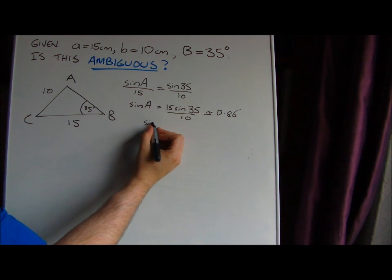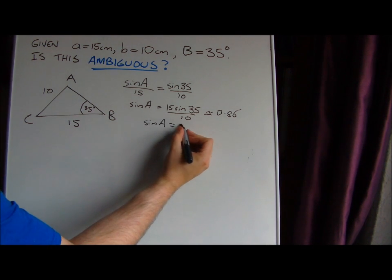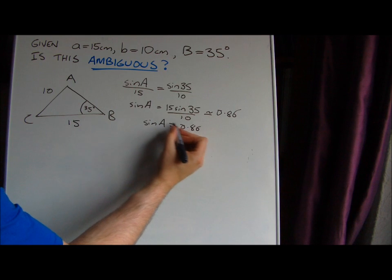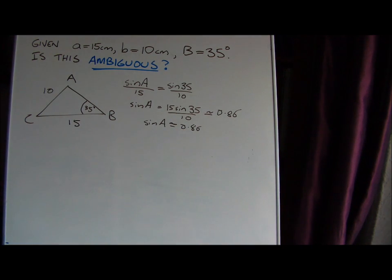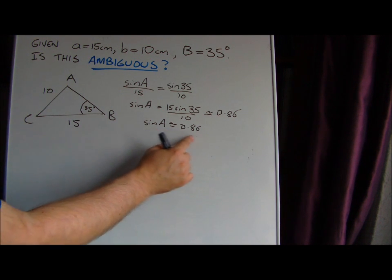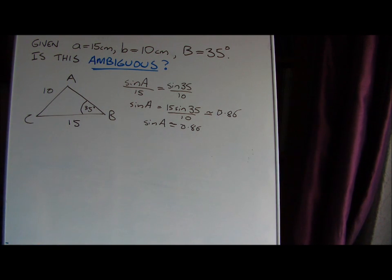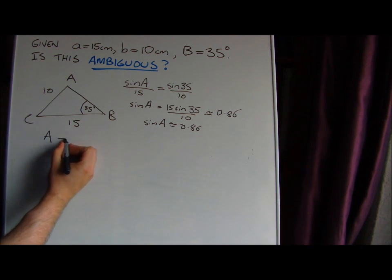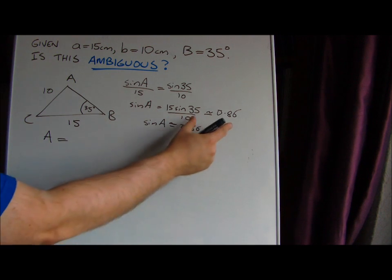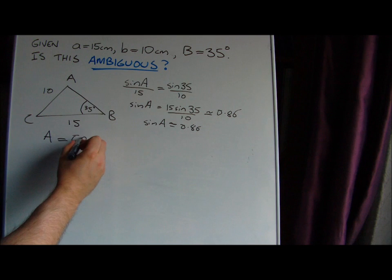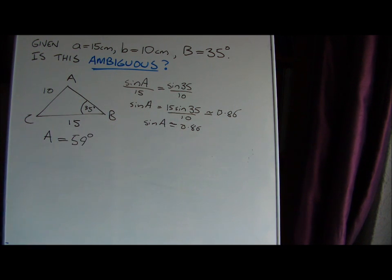So just to be clear, we're solving the equation sine A is about 0.86. Now when we were doing previous work on trig equations, we know our calculator will give us the principal value. Let's calculate the principal value - inverse sine of that. Your calculator should show you that it's about 59 degrees.